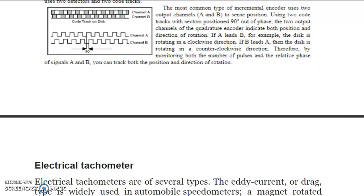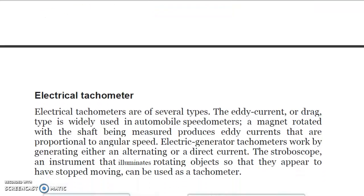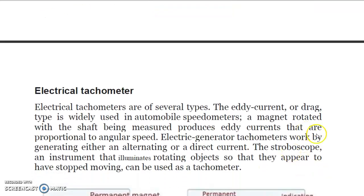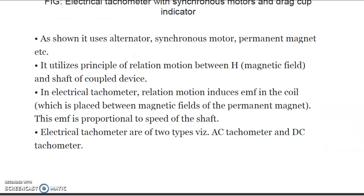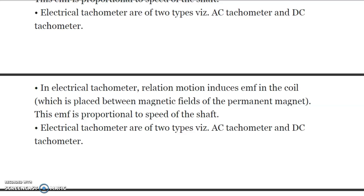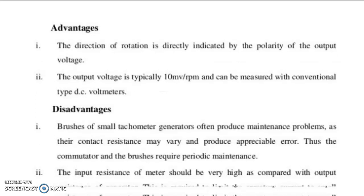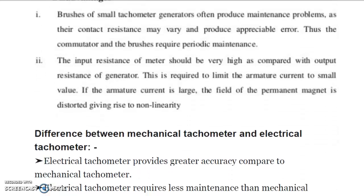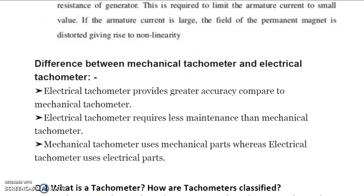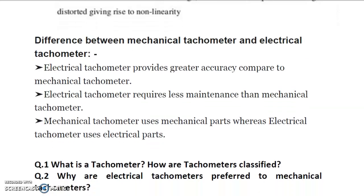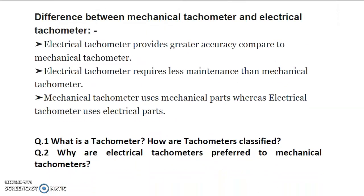That is why electrical tachometers are generally used. Electrical tachometers use electrical technology, and there are two types: AC current type and drag type, which is widely used in automobile speedometers. The differences between electrical and mechanical tachometers are that the electrical tachometer provides greater accuracy, requires less maintenance, and uses electrical parts rather than mechanical parts.